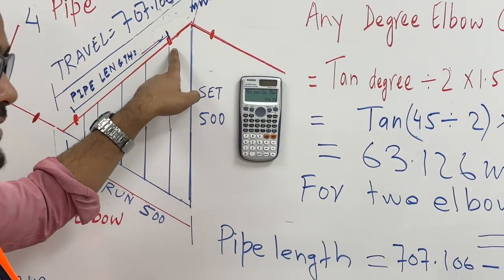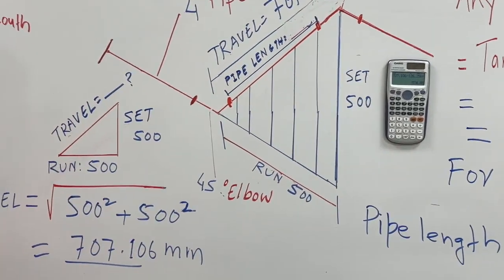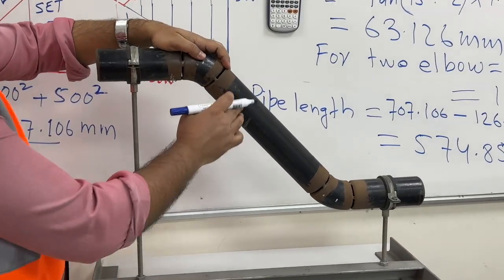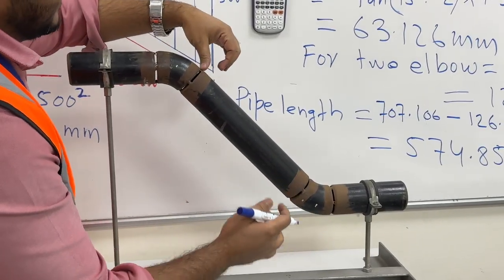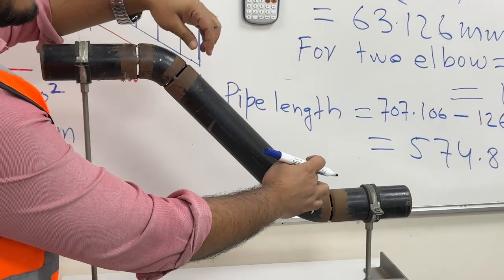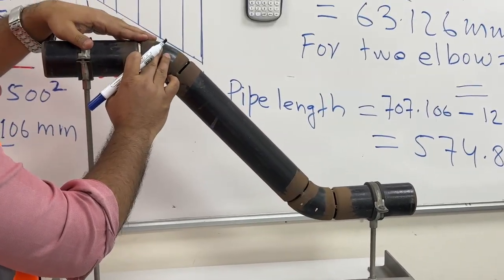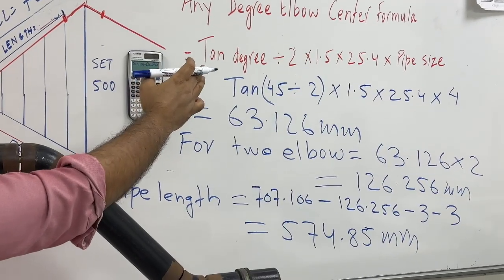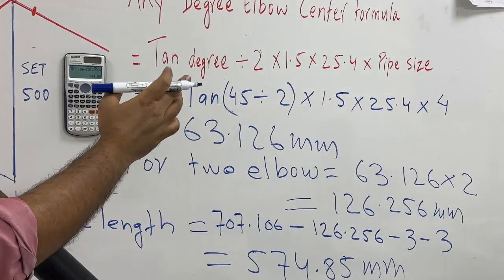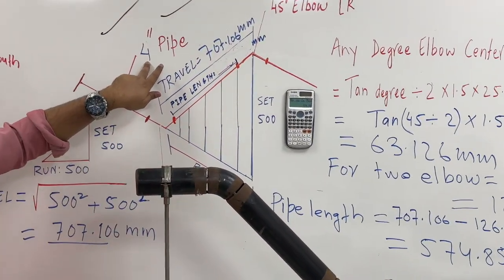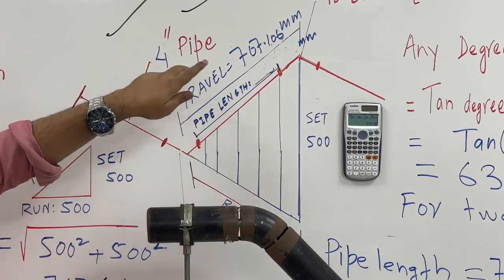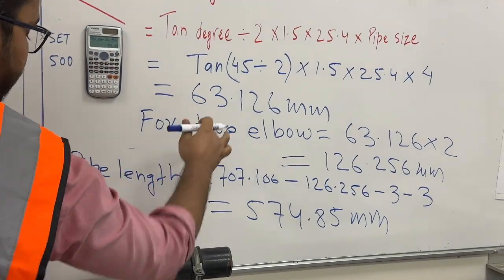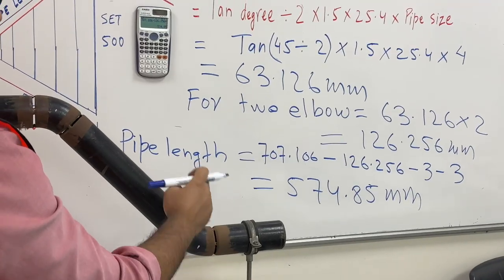This is the pipeline from here to here. Now to understand: here is our elbow and here is our elbow. To calculate the pipeline between them, we calculate the elbow center using the formula: 45 degrees divided by 2, times 1.5, times 25.4, times pipe size. Pipe size is 4 inch, so we keep pipe size as 4 inch. This gives the measurement for one elbow center. For the second elbow we multiply by 2.